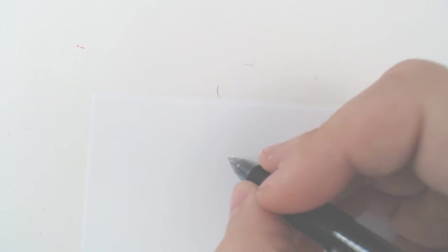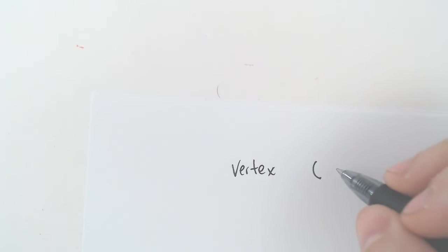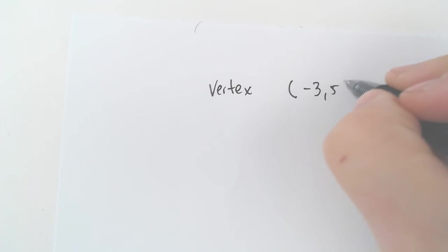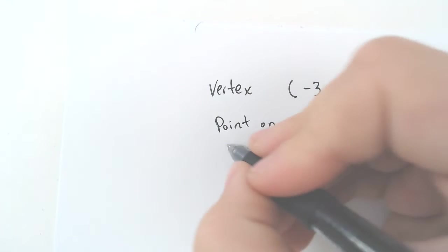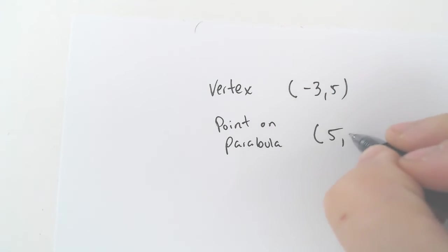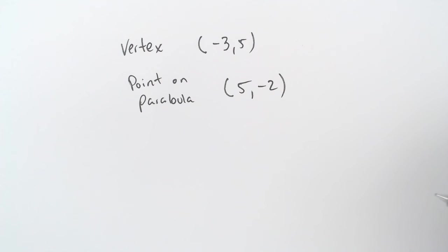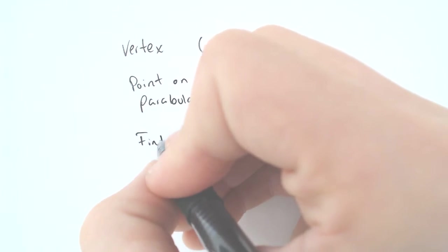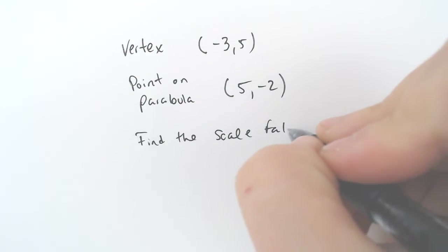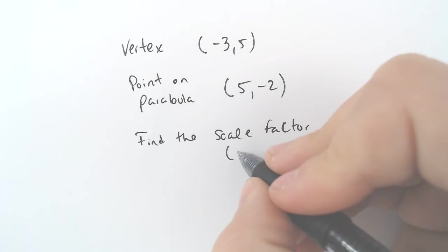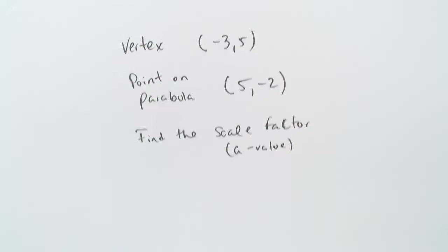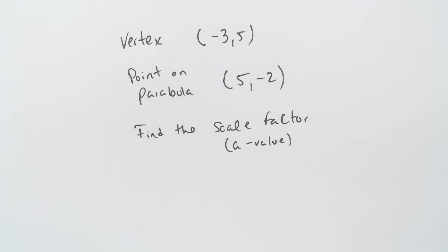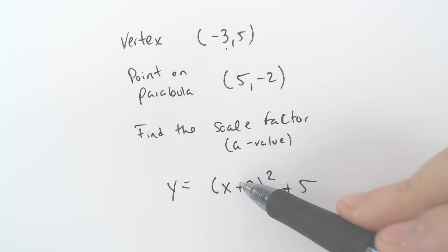Let's say you have a vertex of negative 3, 5, and a point on the parabola of 5, negative 2. And you wanted to find the scale factor. The scale factor is the thing in, it's essentially the A value. The thing in front of the leading coefficient, or in front of the parentheses. So if you are ever given a vertex, you need to put it in to vertex form, change the sign, keep the sign. So that negative 3 became positive, this 5 became regular 5. Stay to 5, change, keep.